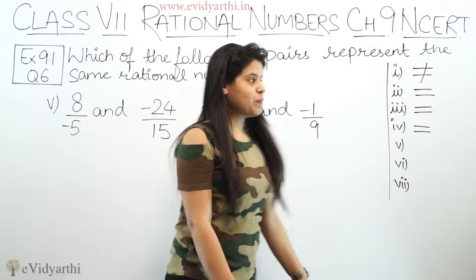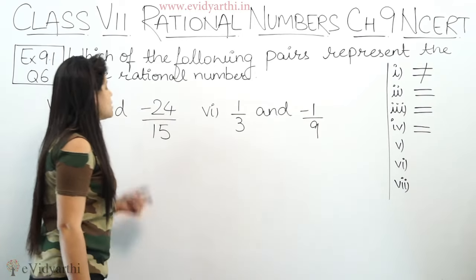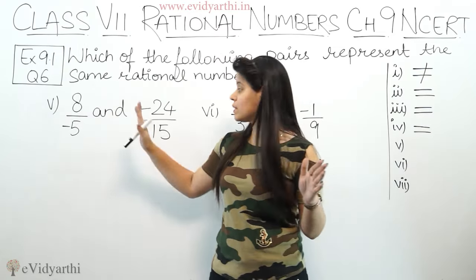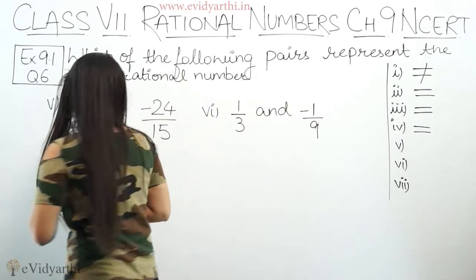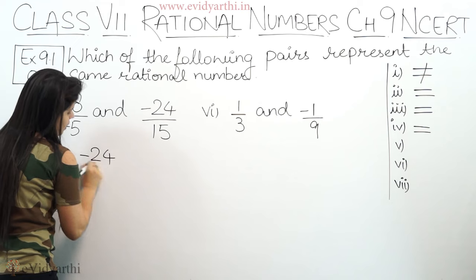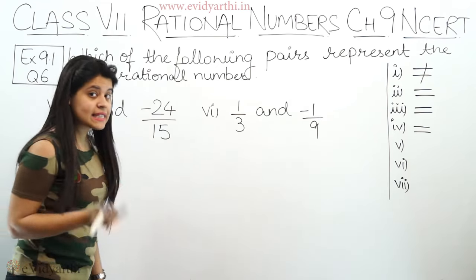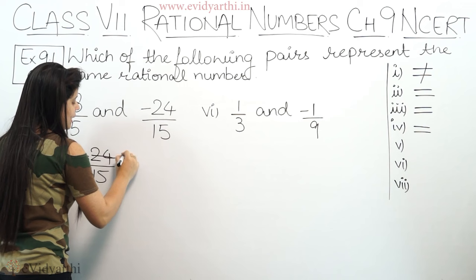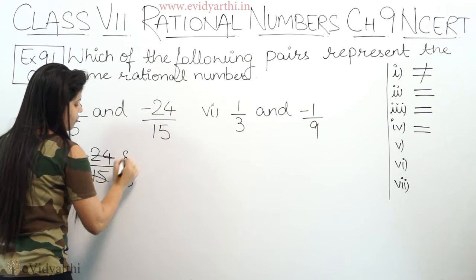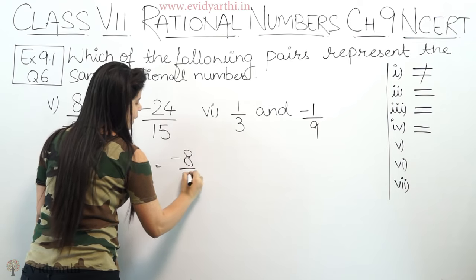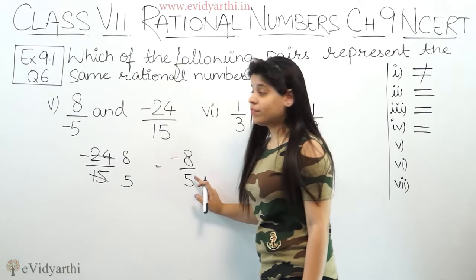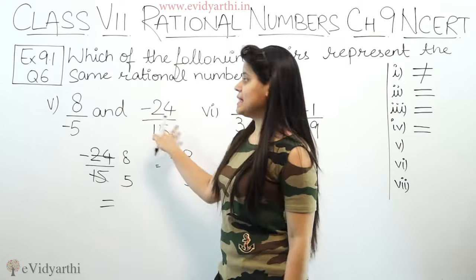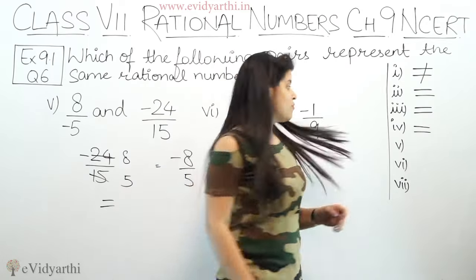Coming to the fifth part, we have 8 upon minus 5 and minus 24 upon 15. 8 upon 5 cannot be simplified, already in lowest form. Let's talk about minus 24 upon 15. These both come in the table of 3 - 24 divided by 3 is 8, 15 divided by 3 is 5, so you get minus 8 upon 5. Now minus 8 upon 5 and 8 upon minus 5 are equal, so these two rational numbers are the same. Fifth part answer is equal.